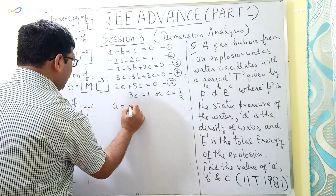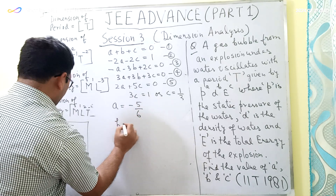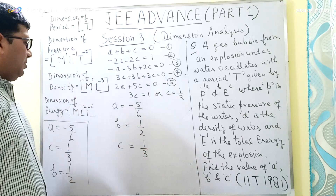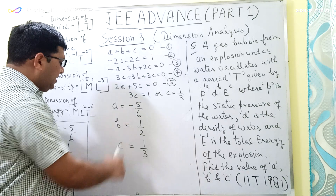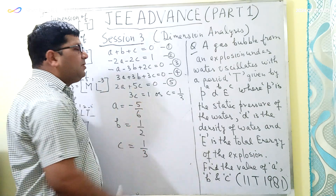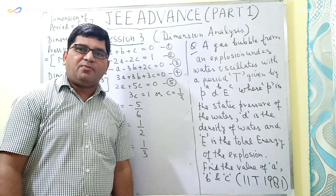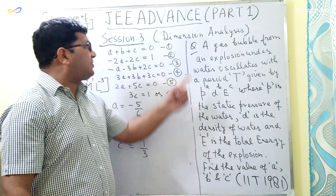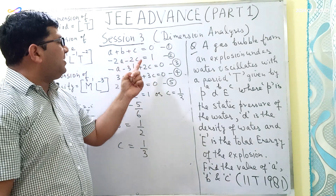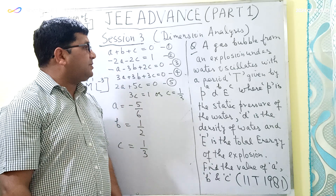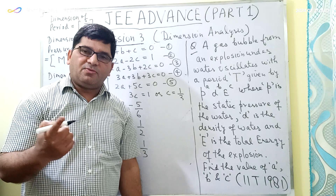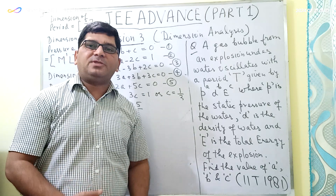So finally, the answers are: A = −5/6, B = 1/2, and C = 1/3. In this question we used the concept of the principle of homogeneity from the topic of dimensional analysis in units and measurement. In the next session I will come up with questions related to the calculation of linear dimensions using a linear caliper and screw gauge. Till then, have a nice day, bye.